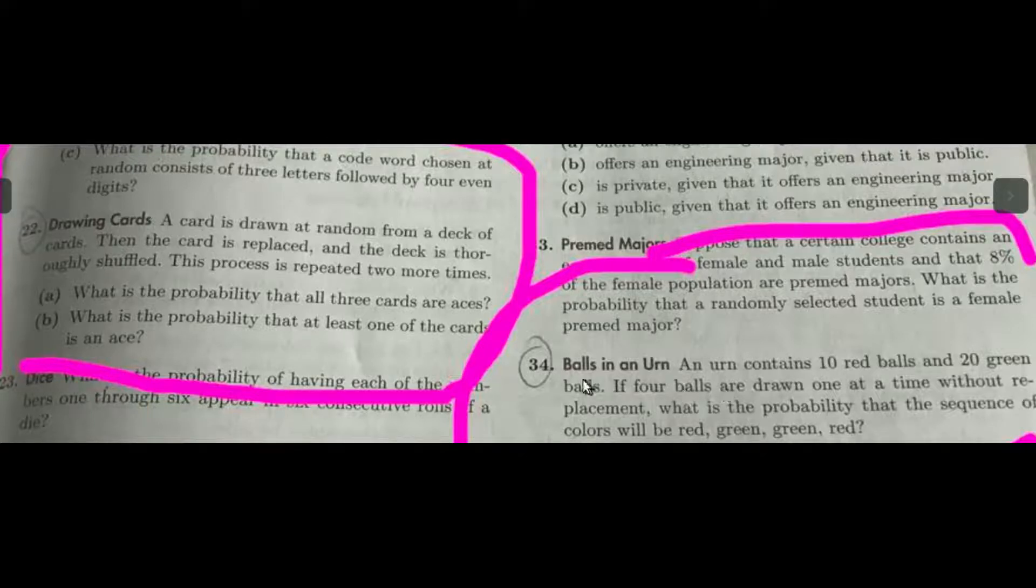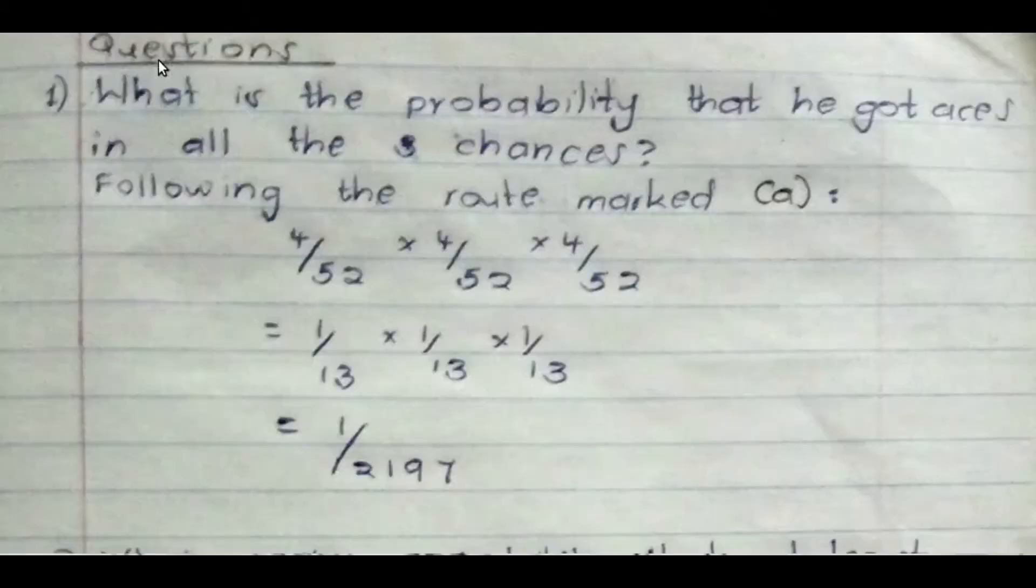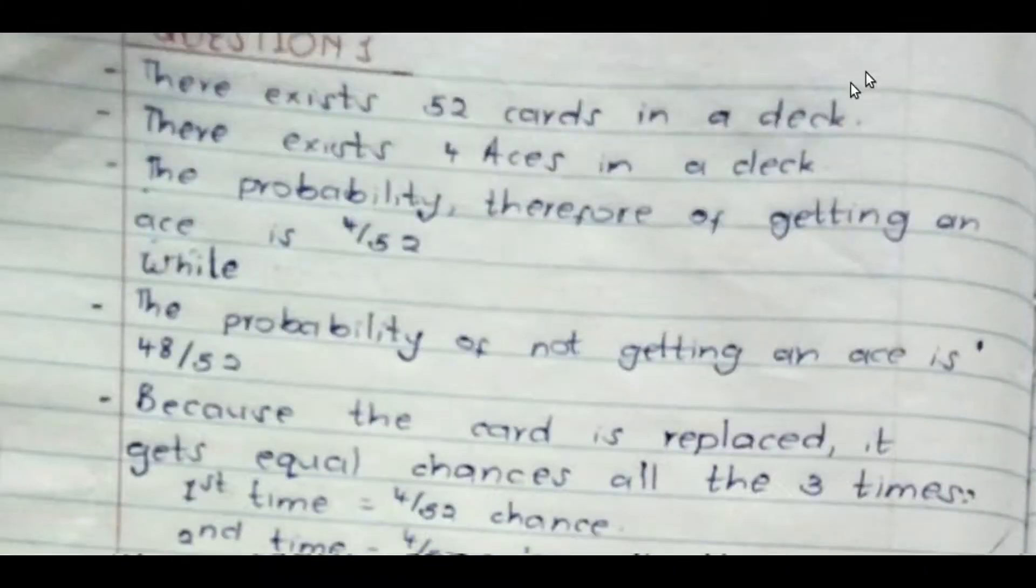The other question is about balls in an urn. An urn contains 10 red balls and 20 green balls. If four balls are drawn one at a time without replacement, what's the probability that the sequence of colors will be red, green, green, and then red? That's it. And we go on to solve it.